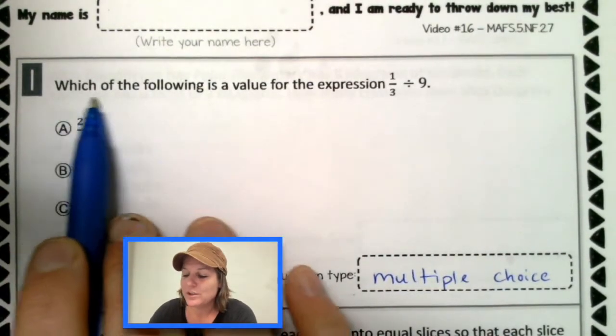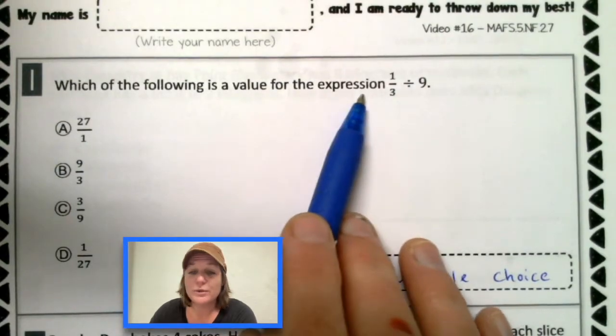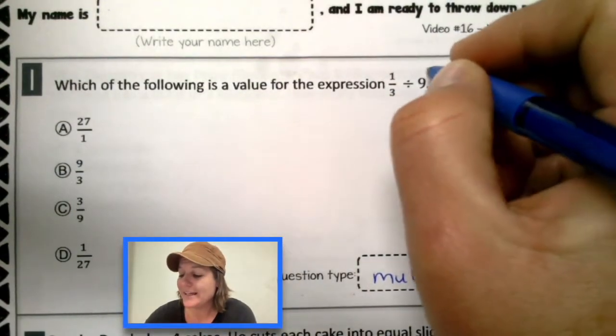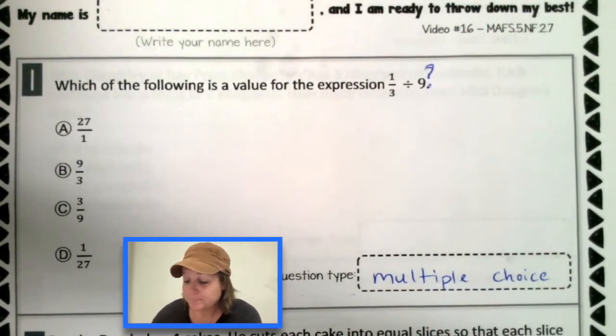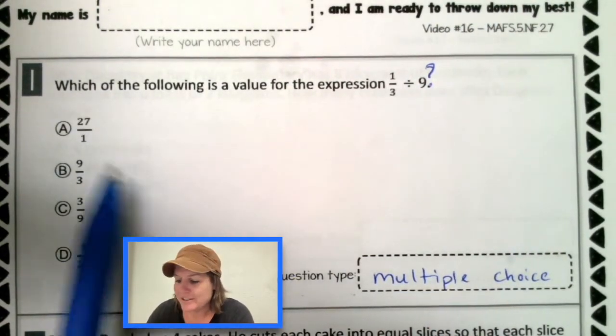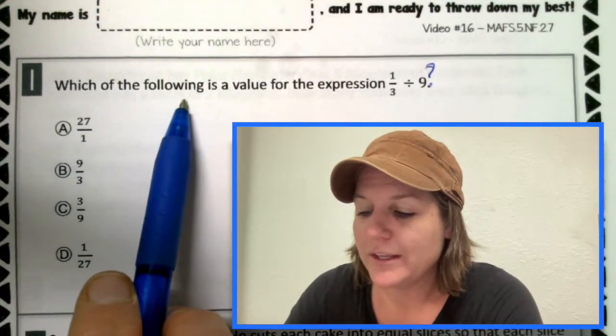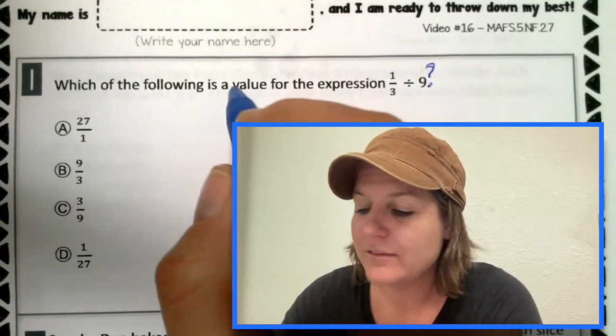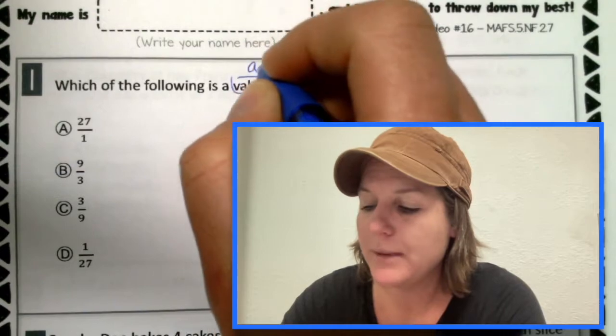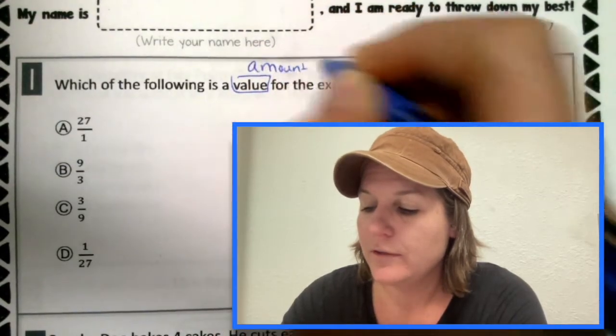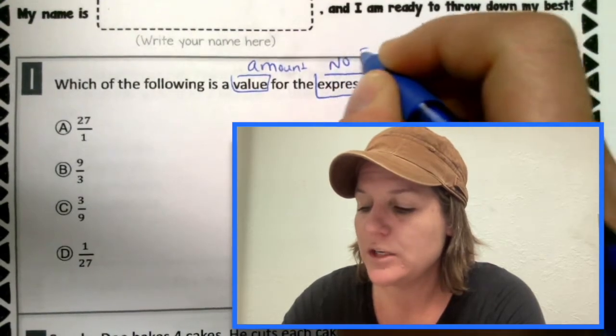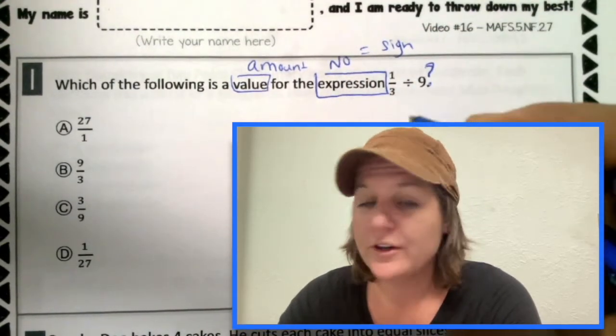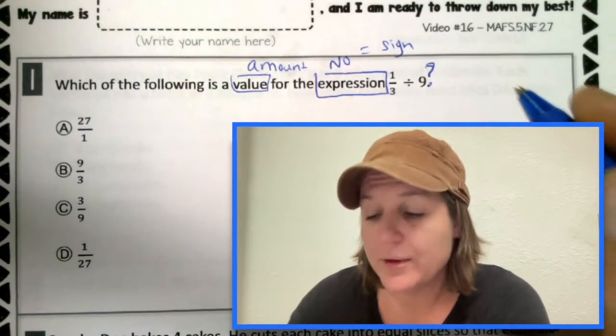I'm noticing something. Which of the following is a value for the expression one third divided by nine? That needs a question mark, not a period. It's a question. All right. Let me read that again slowly. Which of the following is a value or an amount for the expression, which means that there is no equal sign, one third divided by nine.